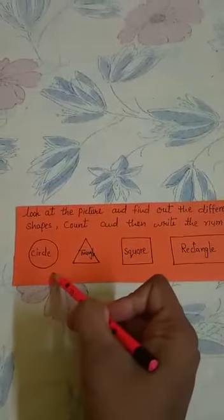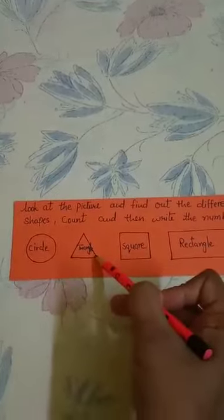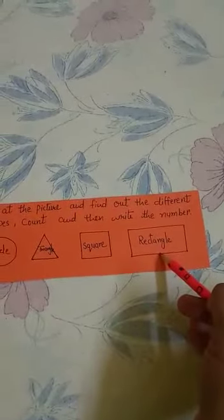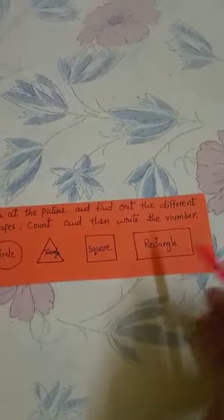Okay children, first shape is circle, triangle, square, rectangle. So today we will do an activity, okay?